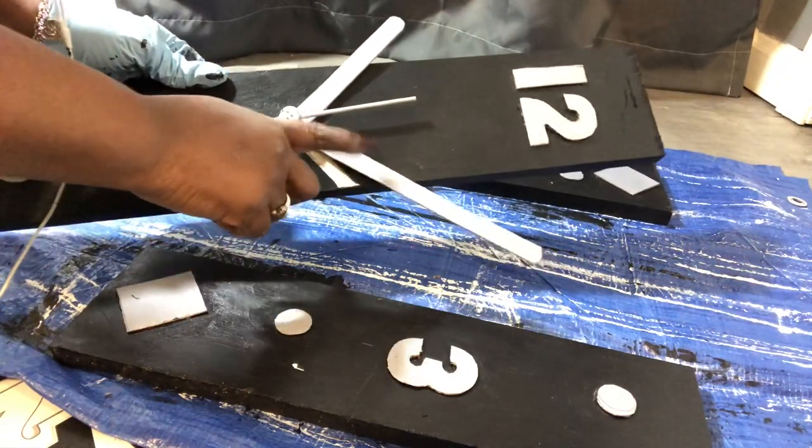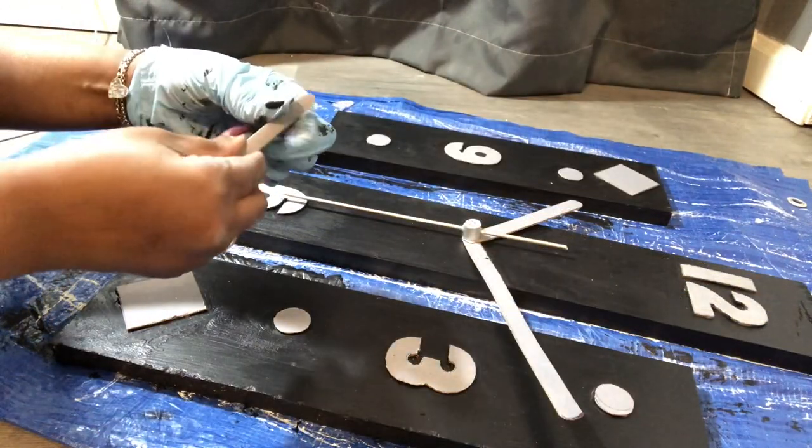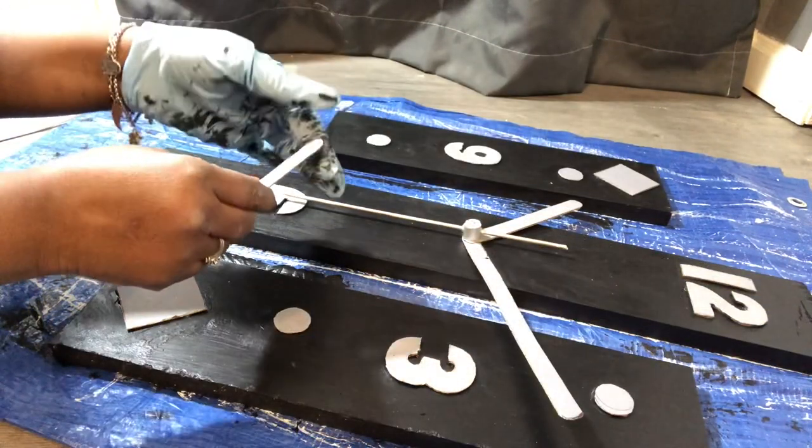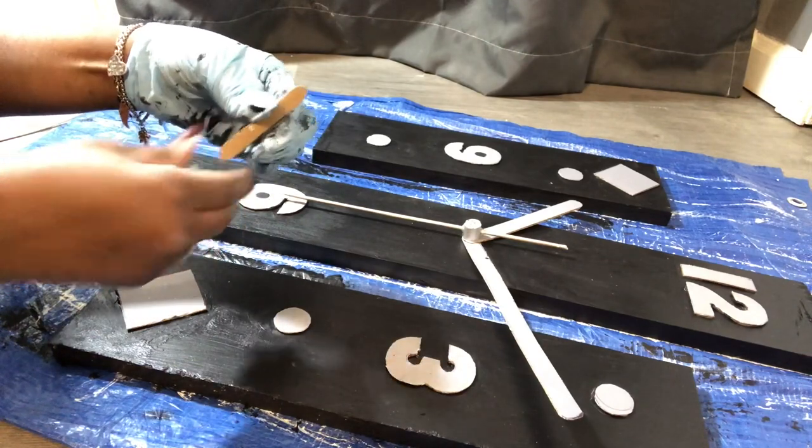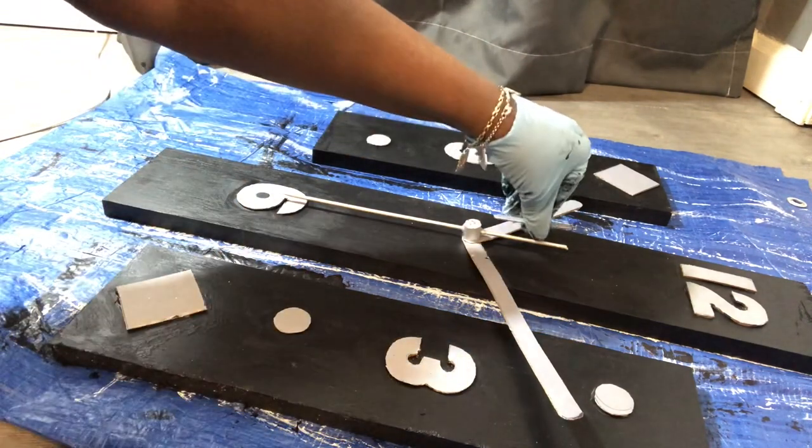I'm getting ready to go ahead and paint this area right here black now that I know where my hand placements are. This is the last thing on the front side that I'm going to do. I'm getting ready to just place this on the hand right here.